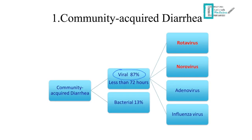Viral diarrhea has an acute onset, happening in less than 72 hours. The most common viruses are rotavirus and norovirus, with rotavirus being more common. Rotavirus should be considered in children and infants, especially in wintertime, as immunity is age-related. We also have adenovirus — think about it in summertime — and influenza virus.